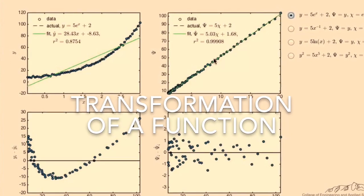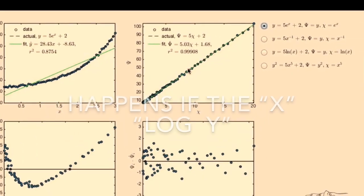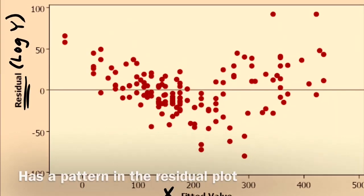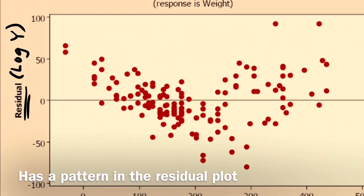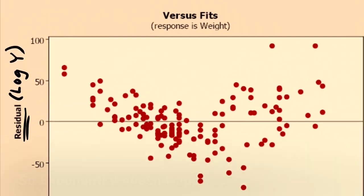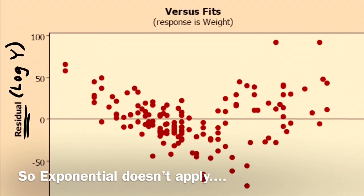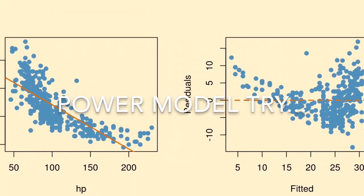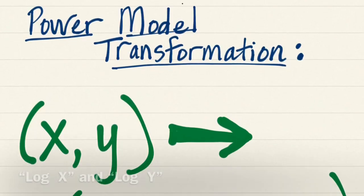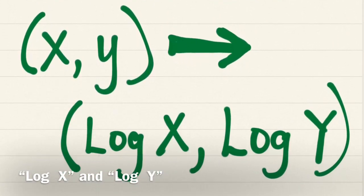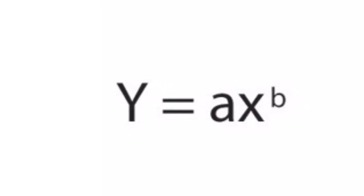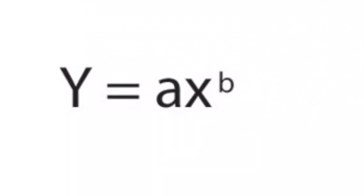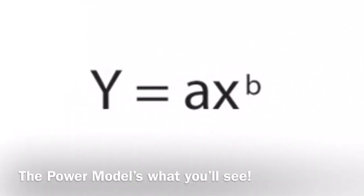Transformation of a function happens if the x log y has a pattern in the residual plot, and so exponential doesn't apply. Power model trial: log x and log y, y equals ax to the b. The power model's what you'll see.